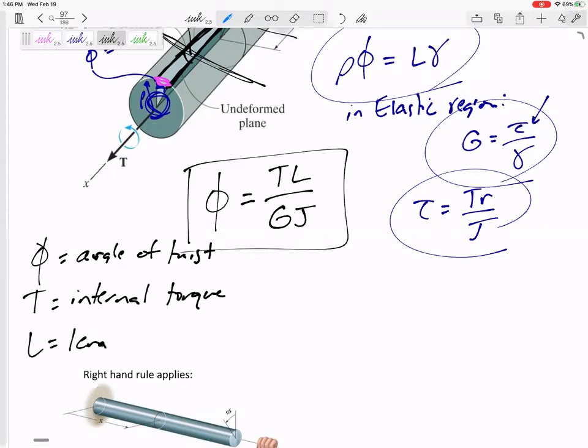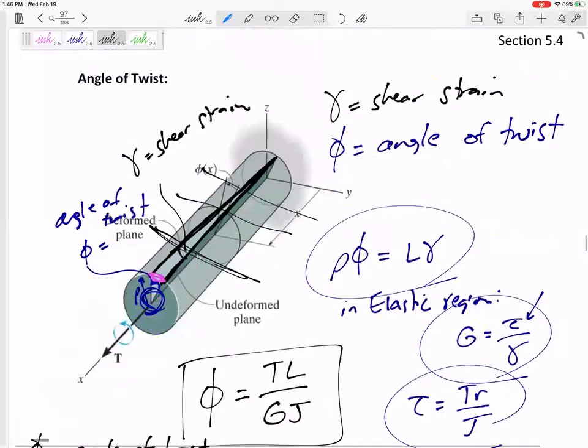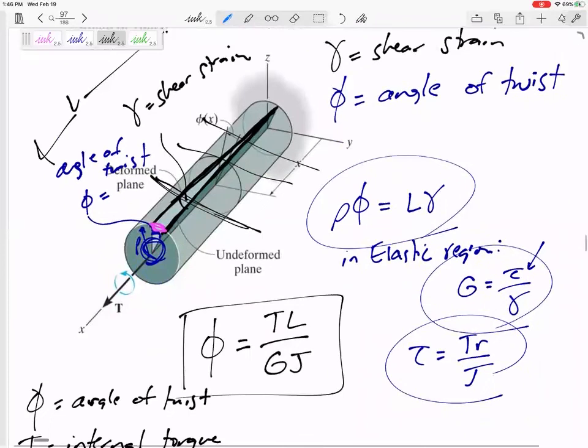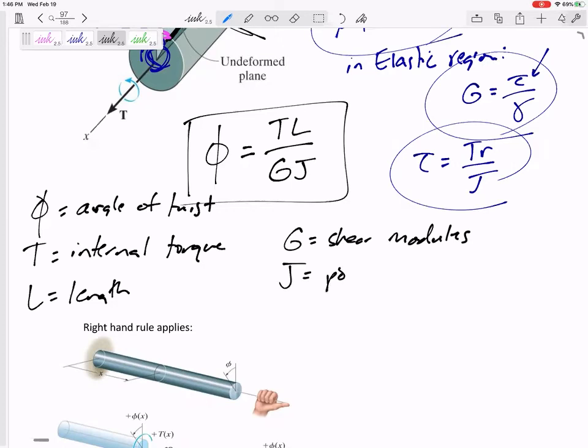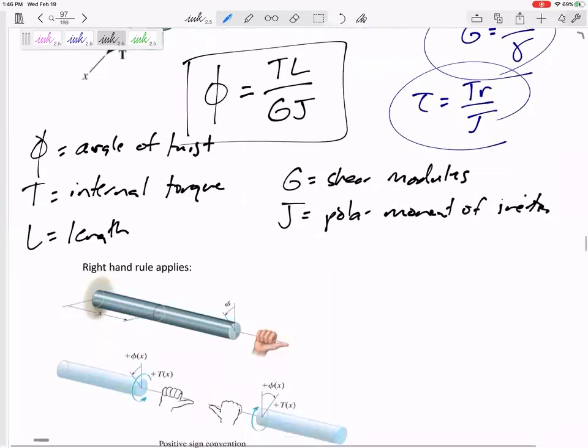L is the length in this direction. L would be that length of that section. G is the shear modulus, or the modulus of rigidity. And J is the polar moment of inertia.